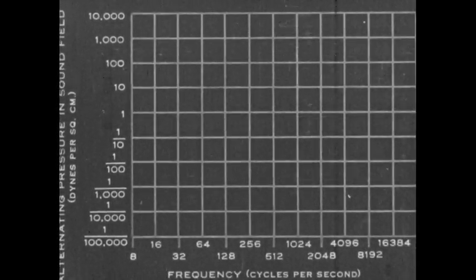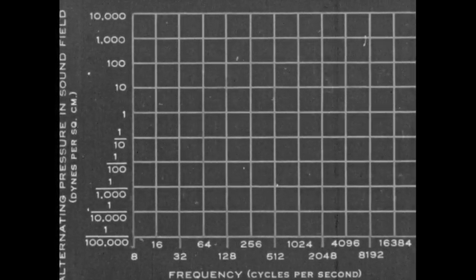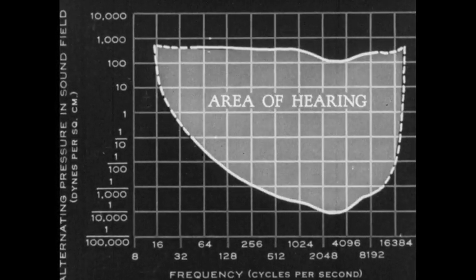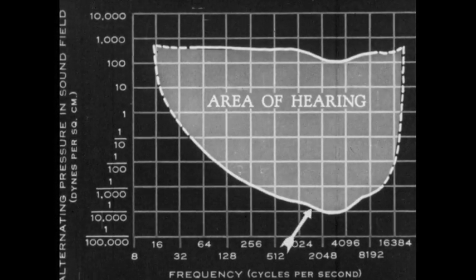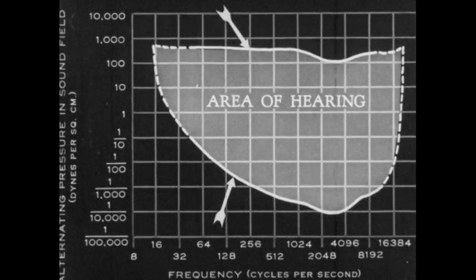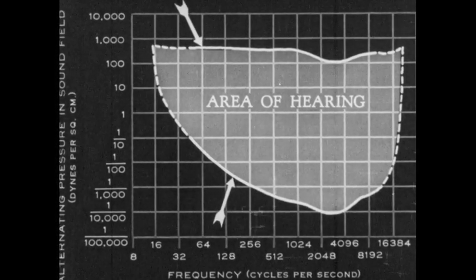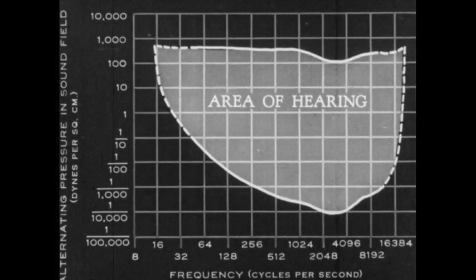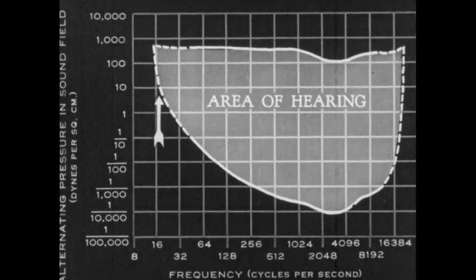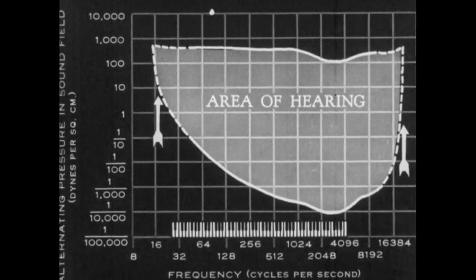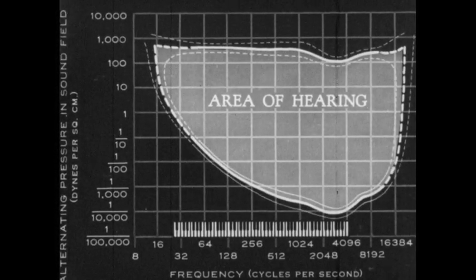Let us consider the sensitivity of the human ear. In place of loudness, which is subjective, we will use alternating pressure in the sound field measured in dynes per square centimeter. The audible intensity range of the normal human ear extends from the flutter of leaves to artillery gunfire. The audible frequency range capable of reception and interpretation extends from about 20 cycles per second to about 20,000 cycles — a range somewhat greater than that of the piano scale.